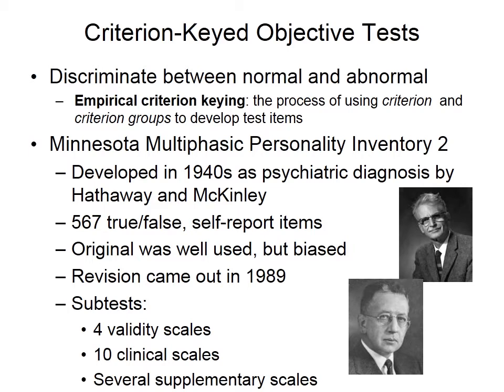Coming back to objective tests, beyond self-report tests like the Big Five, there are also criterion-keyed objective tests. One reason projective tests are appealing is the belief that personality is sometimes unknown to the person — driven by unconscious drives — and that projective tests are harder to fake, since it's harder to know what a right or wrong response is. Objective tests like the Big Five are easy to game if you know what theory you're being tested under.